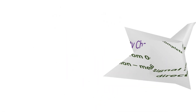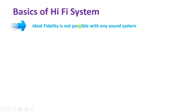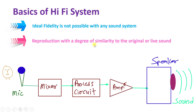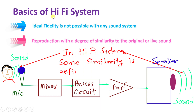Now let us see the Hi-Fi system. Let us discuss the basics of Hi-Fi system. Ideal fidelity is not possible with any sound system, as we have seen from those characteristics. So what is a Hi-Fi system? Reproduction with a degree of similarity to the original or live sound is what Hi-Fi system provides, and that reproduction with degree of similarity can be defined by having some characteristics.